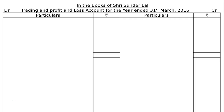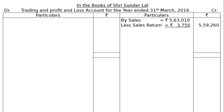It is better to start from the credit side. Sales are Rs. 5,63,010, less sales return Rs. 3,750, giving a final column amount of Rs. 5,59,260. Then closing stock is Rs. 1,27,410.